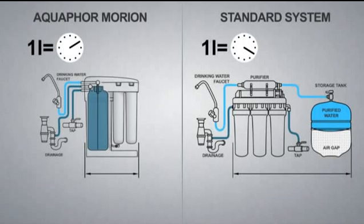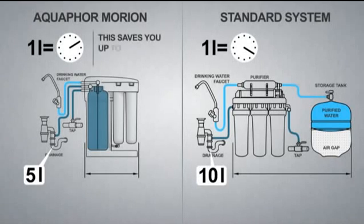Aquaphor Morion lowers your water consumption. Aquaphor Morion needs only 5 liters of source water compared to 10 liters for conventional systems. This saves you up to 9 tons of water per year. Aquaphor Morion's membrane has a longer life and lower maintenance costs.